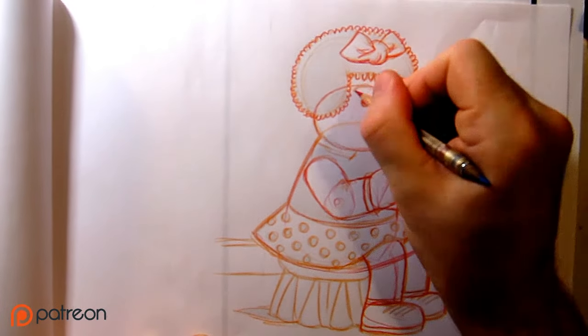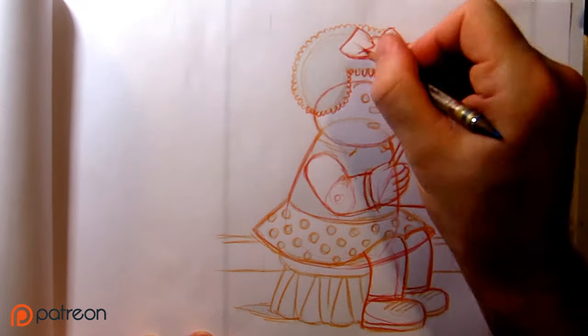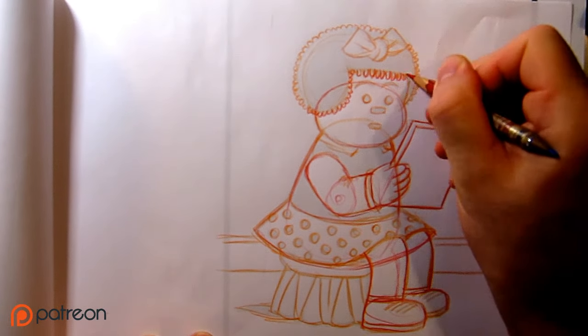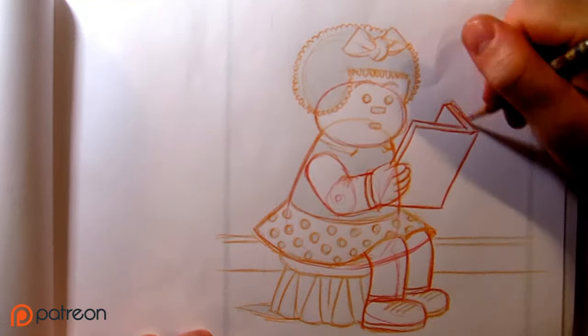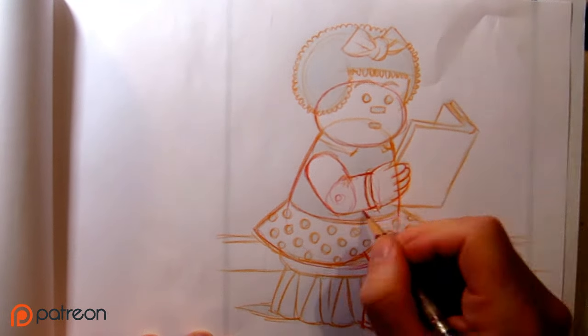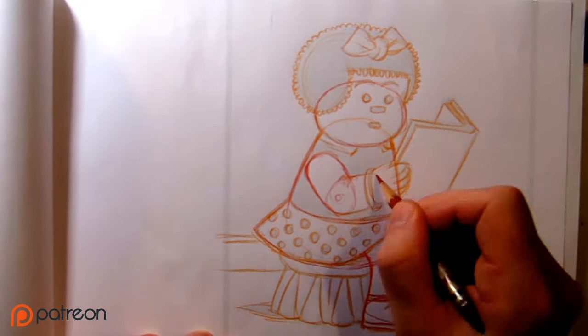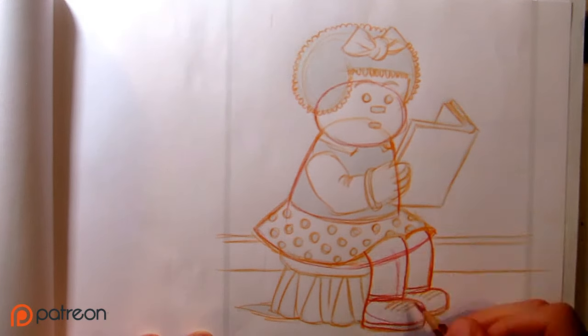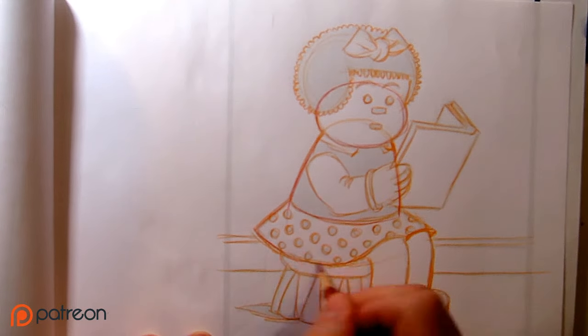One of the things I assign in the class is to do studies of several iconic, memorable cartoon characters. The way we do this is to reverse engineer the character. Most cartoon characters, especially some of the most iconic ones, are built on, underneath it all, a constructive system of building up the forms.